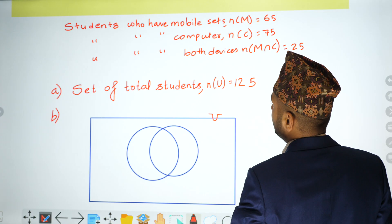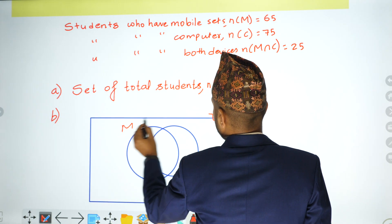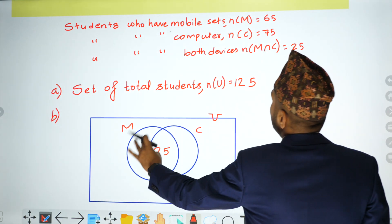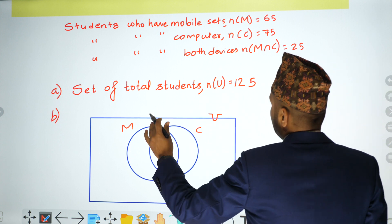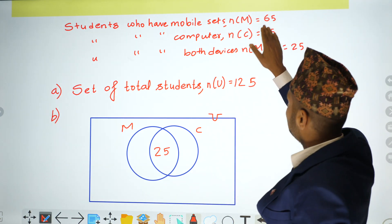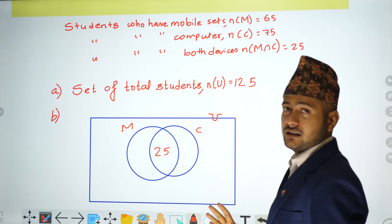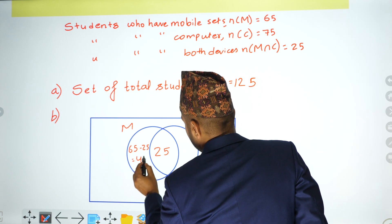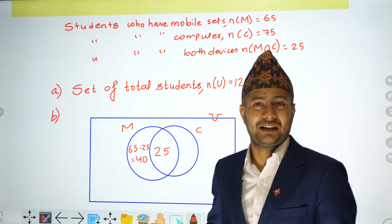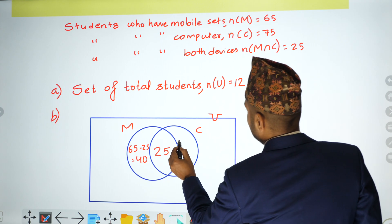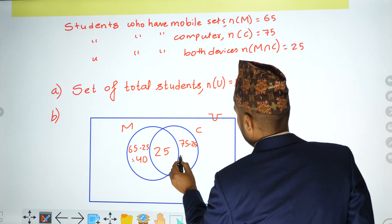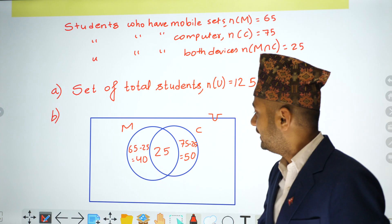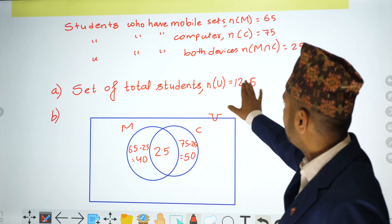The universal set is U, and mobile and computer are available. We have 25 students with both. Students with only mobile: 65 minus 25 equals 40. Students with only computer: 75 minus 25 equals 50. So 40 plus 50 equals 90, and 90 plus 25 equals 115. The total is 125.